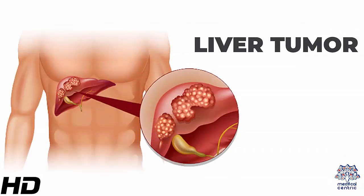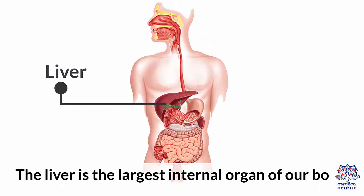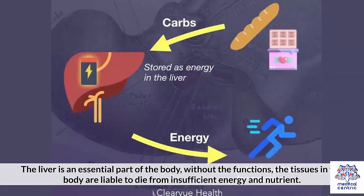Today's topic is liver tumor. A liver tumor is the abnormal growth of cells on or in the liver. The liver is the largest internal organ of our body. It aids in metabolism, digestion, immunity, and storage of essential nutrients within the body. The liver is an essential part of the body.